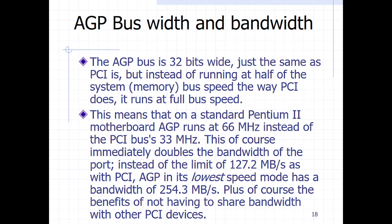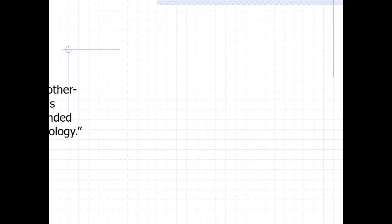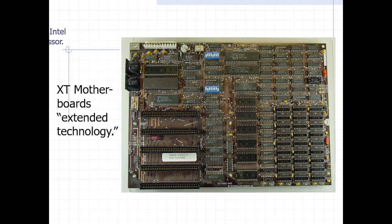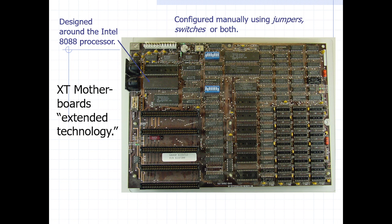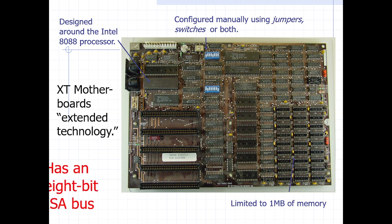The speed of the AGP is the same as the PCI — it has 33 MHz. Now, this is an old motherboard — an extended technology motherboard. It only runs on the ISA bus, 8-bit. This particular motherboard supports a very slow bus system known as the ISA. Configuration was done via jumpers, and it was only limited to one megabyte of memory. This is old technology.